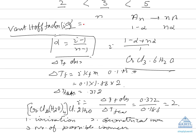Now, since we know that the number of species actually present are different from the number of species taken, this abnormality in molecular mass is given by Van't Hoff factor i, which is the ratio of the number of species actually present to the number of species taken.